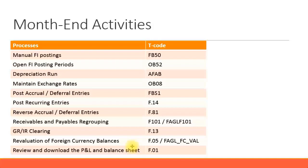After all postings and adjustments, you can execute and download the P&L and balance sheet. The format depends on the financial statement version you have created. In transaction code F.01, specify your financial statement version and execute the balance sheet and P&L statement. You can then download it, review it, pass it on to external accounting managers or other relevant parties, and sign off on the figures as the completed balance sheet and P&L for that month.